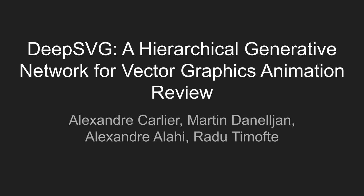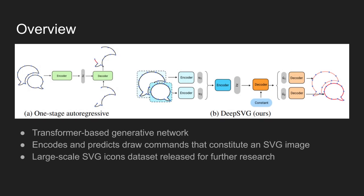Today's paper is DeepSVG, a Hierarchical Generative Network for Vector Graphics Animation. The work proposes a hierarchical transformer-based generative network that generates and interpolates complex scalable vector graphic icons. The model is capable of both encoding and predicting the draw commands that constitute an SVG image. Together with their work, the authors released a large-scale SVG icons dataset for further research in the field.